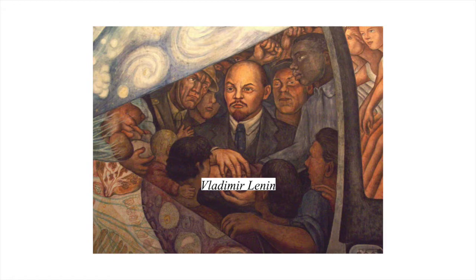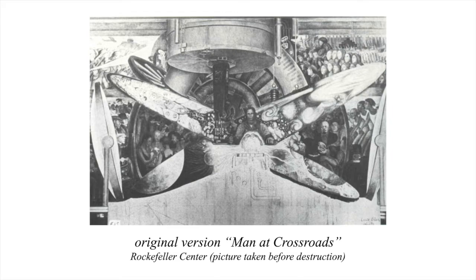Rivera refused, instead offering to add Abraham Lincoln to the work as a way of compromise. Rivera was eventually fully paid the promised amount for his work, but the mural was covered in drapery and left incomplete. Despite protests from art lovers and attempts to get it moved to the Museum of Modern Art, it remained covered until 1934, when it was destroyed by workmen.